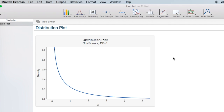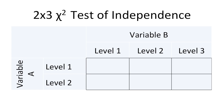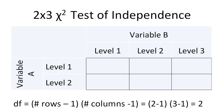Let's look at one more example. Here we have a two-by-three chi-square test of independence. Variable A has two levels, but now variable B has three levels. The degrees of freedom for a two-by-three chi-square test of independence are equal to two minus one times three minus one, which equals two. We'll go to Minitab Express again and now we'll construct a chi-square distribution plot with two degrees of freedom.